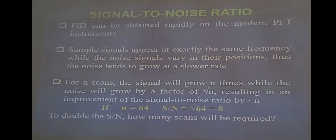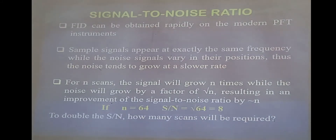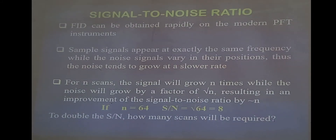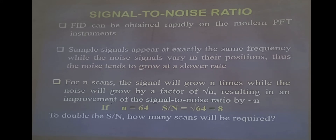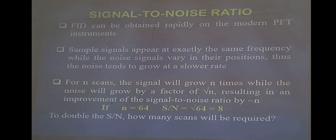Now if you want to double the signal-to-noise ratio — if you are not satisfied with the number 8 — like if you have scanned your sample 64 times and the signal-to-noise ratio is 8, but the resultant spectrum is not good enough or not clean enough to be interpreted, you are not happy with the result and you want to increase the signal-to-noise ratio so as to decrease the noise level and increase the signal level.